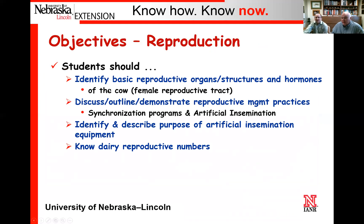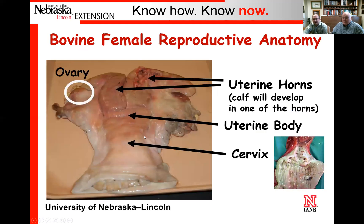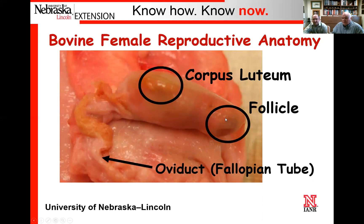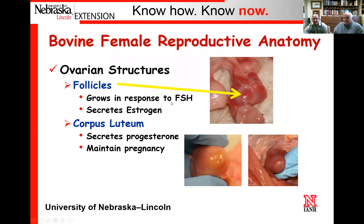In terms of reproduction, we want students to be able to understand and identify the basic reproductive organs, structures, and hormones of the reproductive tract. They should be able to outline a synchronization program and know how to perform artificial insemination in terms of the tools used and the proper way to do it. We also want you to know some dairy reproductive numbers. Let's start with the reproductive tract — students need to identify certain parts, including the ovary and fallopian tubes, what the structures of the ovary are, and what they do and what they respond to.